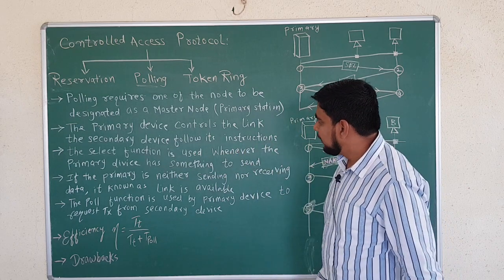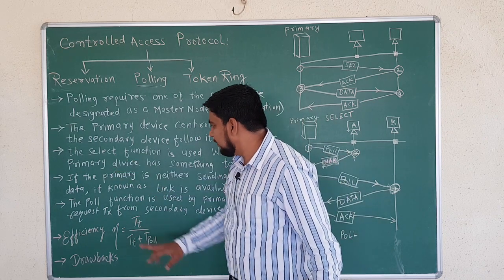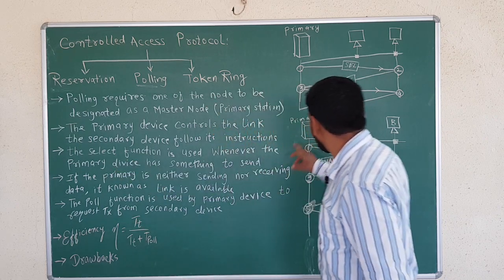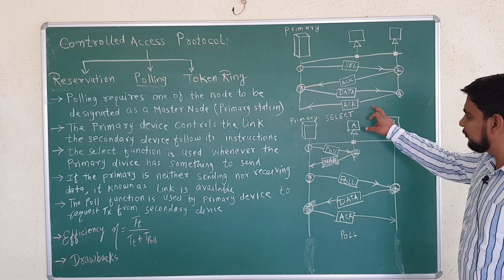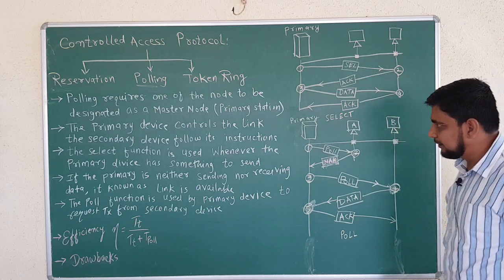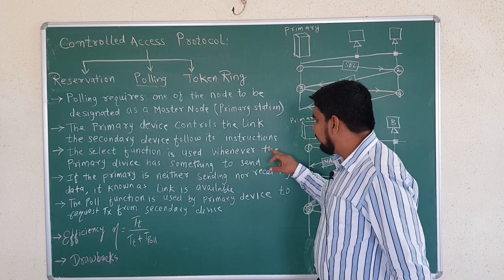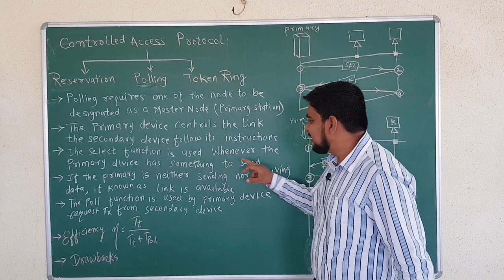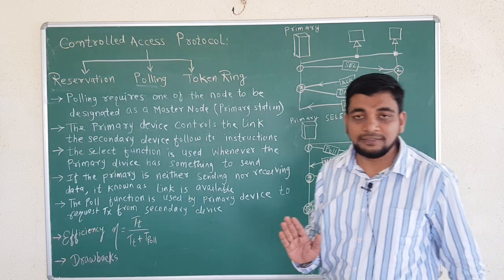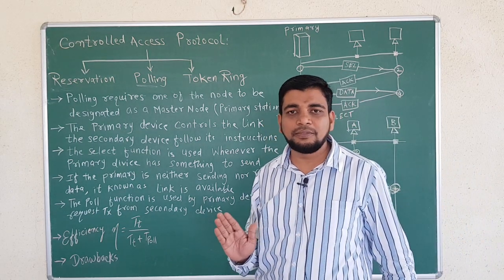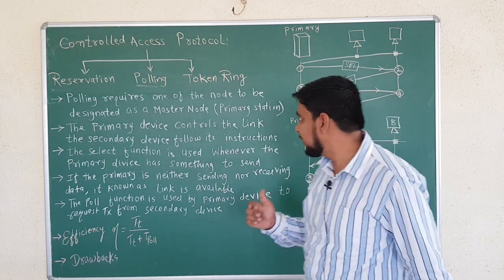There are two functions used in polling: the select function and the poll function. Now, what is the function of the select function? A select function is used whenever the primary device has something to send — whenever the master node wants to send some information, it will use the select function.